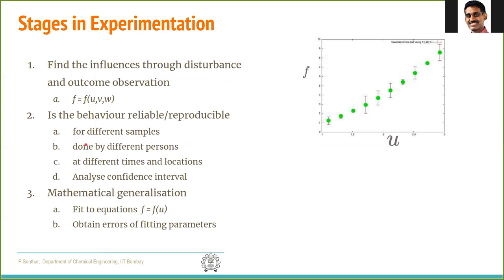The second step is to check for this behavior, whether this behavior is reproducible. That is, we do it several times done by different persons at different times and at different locations. This is done to rule out any bias introduced by humans in the conduct of the experiment.